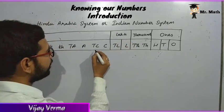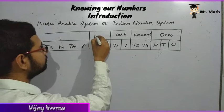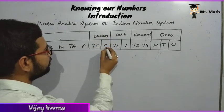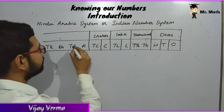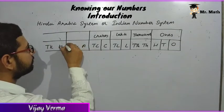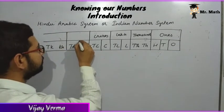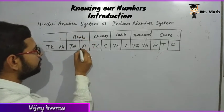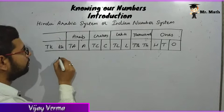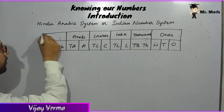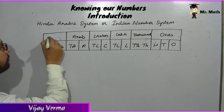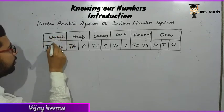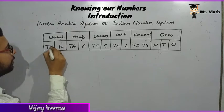The next period is crore. It also has two place values: crore and ten crore. After that comes the fifth period — arab, with two place values: arab and ten arab. Then comes kharaq, which also has two place values: kharaq and ten kharaq.